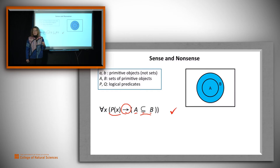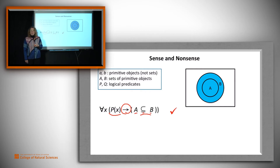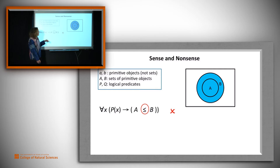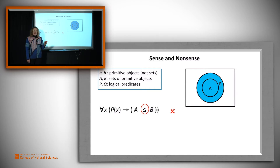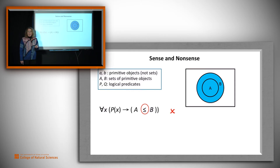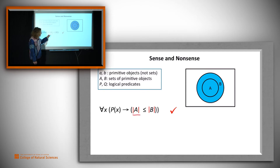Suppose I had in mind a situation where A is a subset of B, and I wanted to claim that if P(x) is true then this has to be true. It might have occurred to me to write A ≤ B — but that is nonsense. It's true that there is some sense in which A is smaller than B, but I can't write it this way, because less-than-or-equal-to is an operator that applies to numbers and sizes. A and B are sets — they're not numbers and not comparable that way. What I really meant to say was that the size of A is less than or equal to the size of B, and that is a sensible, and in this case true, claim. The one in the middle was nonsense.